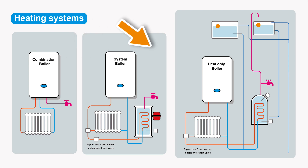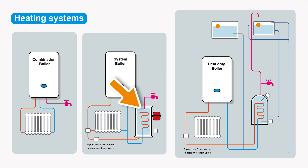With system and heat-only boilers you don't have instantaneous hot water - you store hot water. These are better for larger properties. Combi boilers can only heat so much water; you get flow rates of 12 or 15 litres a minute. Larger properties with more bathrooms mean the combination boiler just can't keep up with hot water demand. System and heat-only boilers have a store of hot water that gets heated up and you can draw on it as you need it. In both types you can have timed thermostatic control for your heating.